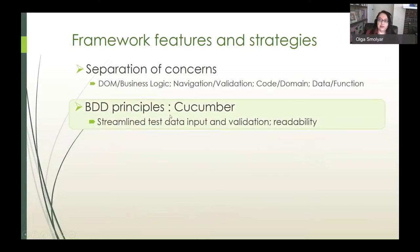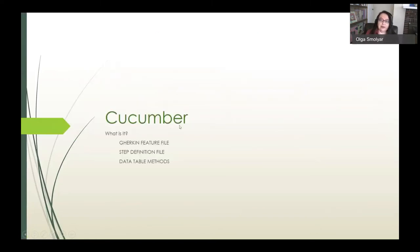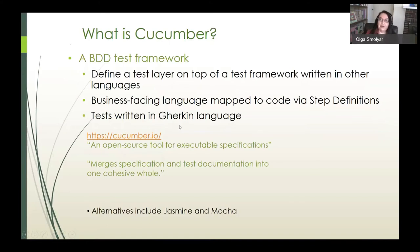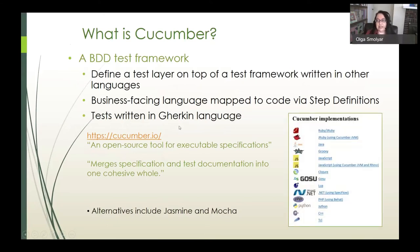Next, we'll take a quick look at our use of BDD principles, which is basically about cucumber. And what is cucumber? It's a behavior driven development test framework, which defines a test layer on top of a test framework written in other languages for which cucumber provides bindings. It provides a business facing language, which gets mapped to code via step definitions. If you look at Cucumber's website, they describe themselves as an open source tool for executable specifications that merges specification and test documentation into one cohesive whole. So this describes an ideal of BDD development where end-to-end traceability from requirements to code is implemented using Gherkin. But it can also be used to simply write tests in the spirit of test driven development, and this is more what InterSystems strives for.